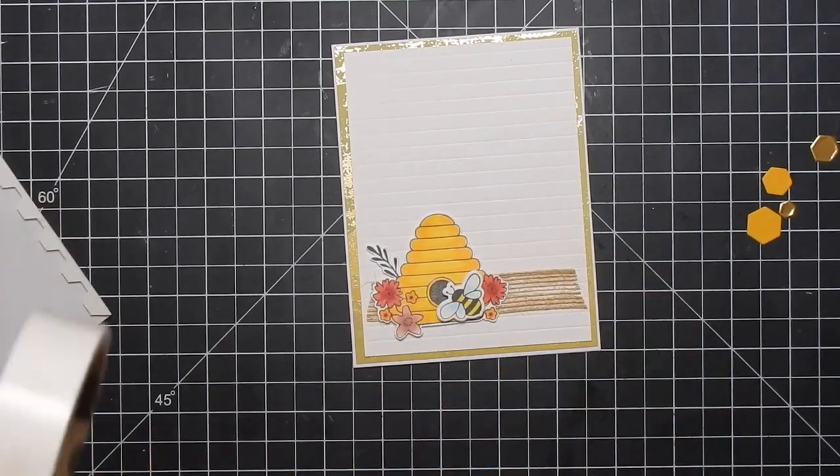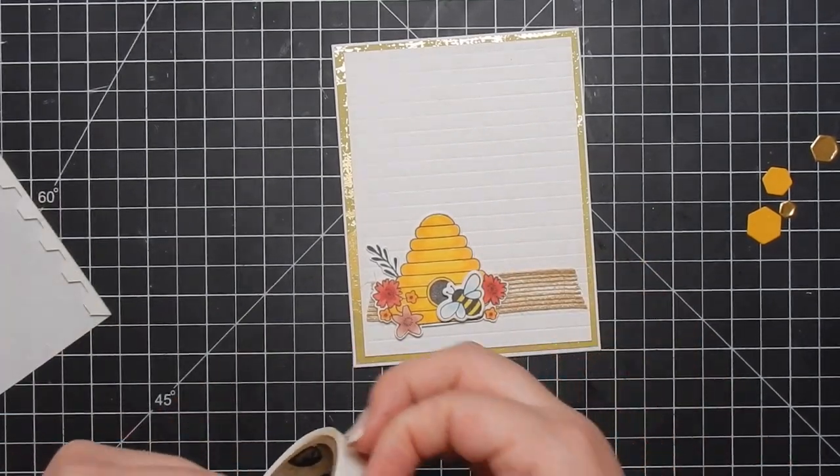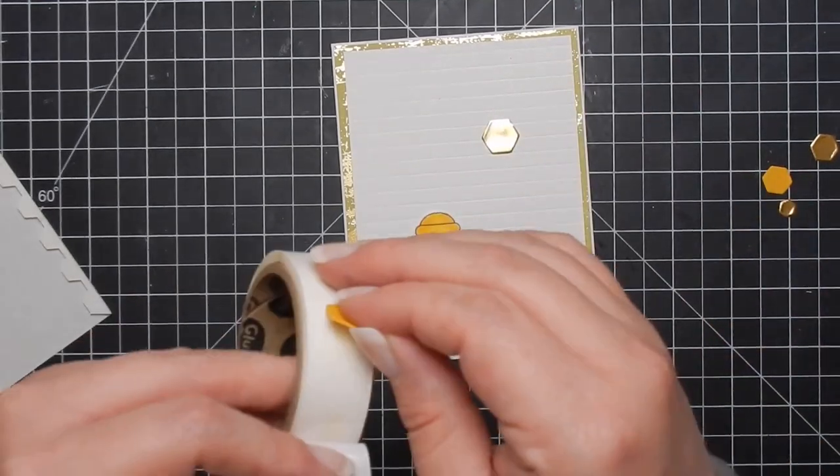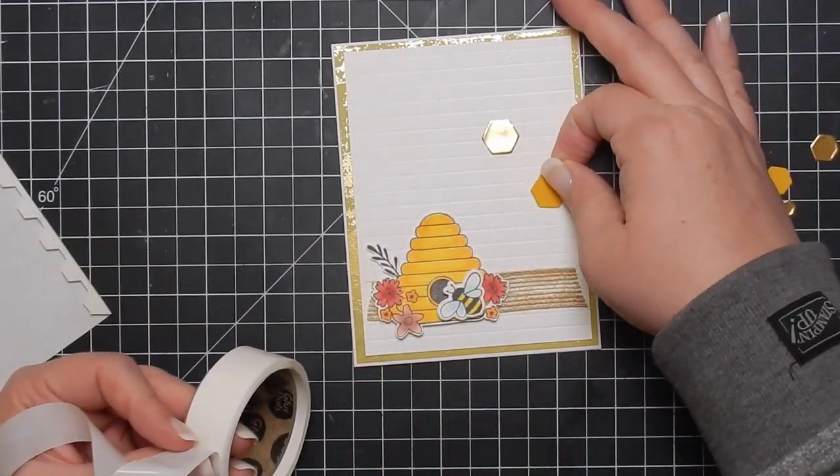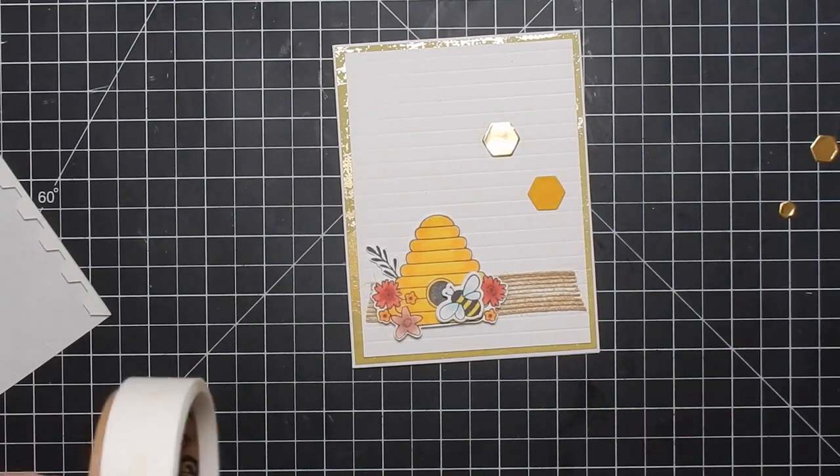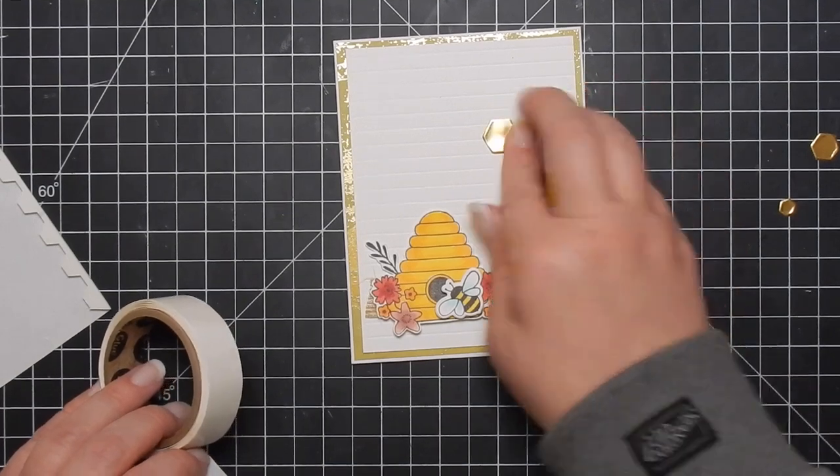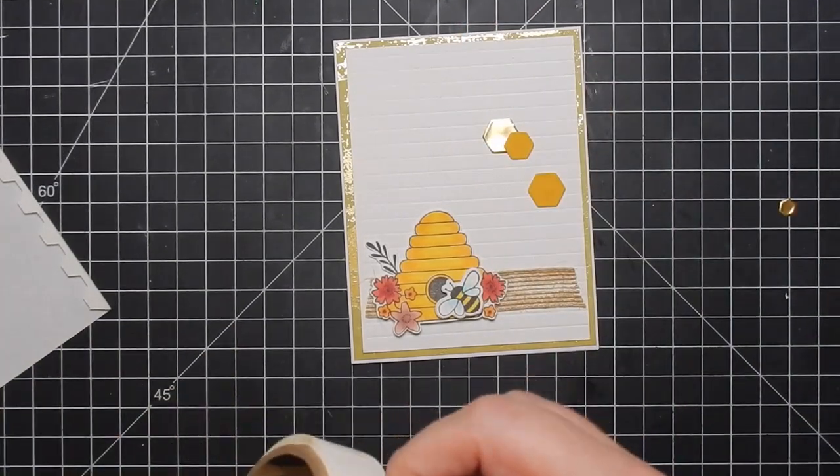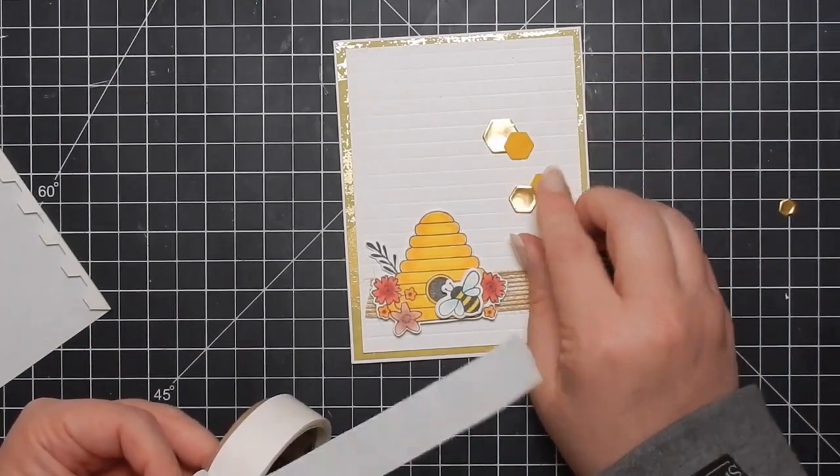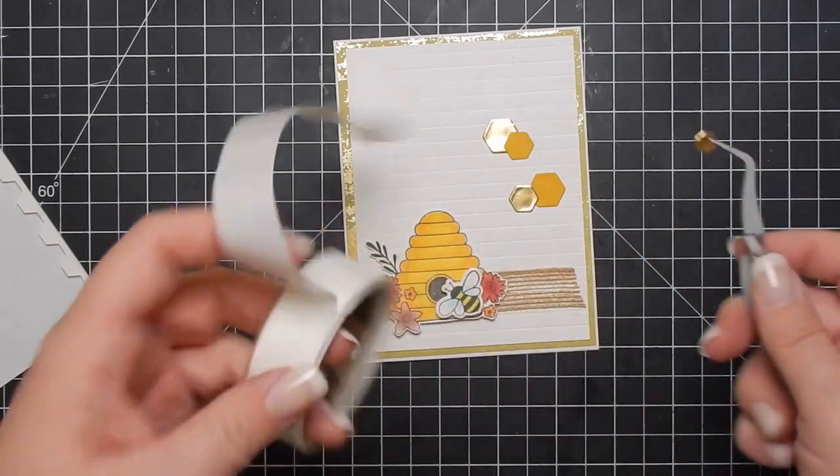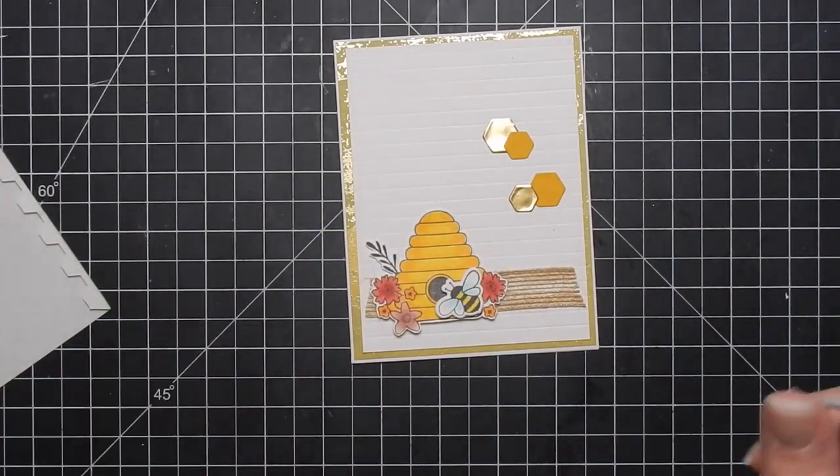I do pop up some pieces. I attach these with some glue dots. And then the rest of the items, the bees and the beehive are using dimensionals. Foam tape. I did use some foam pieces. You get a little thing of foam tape, foam squares I should say, in your kit.